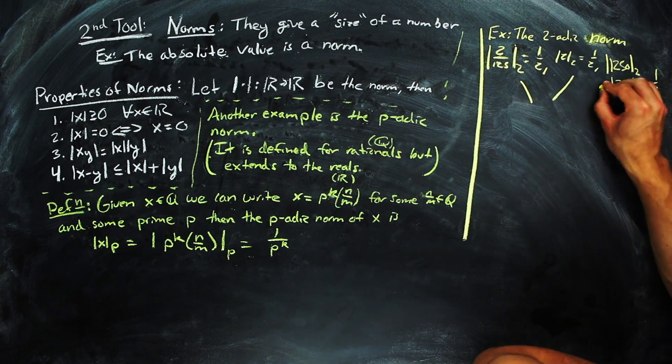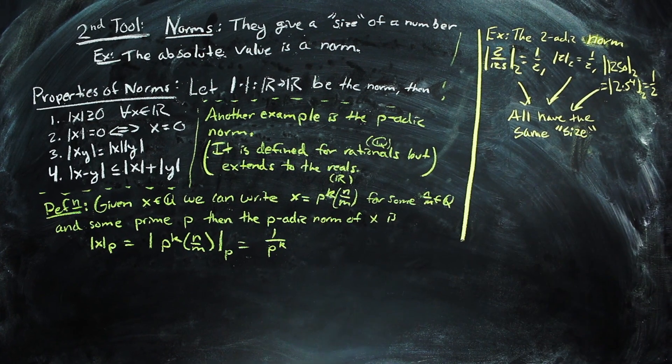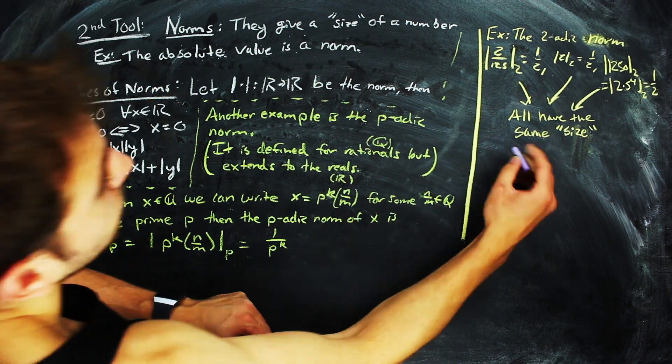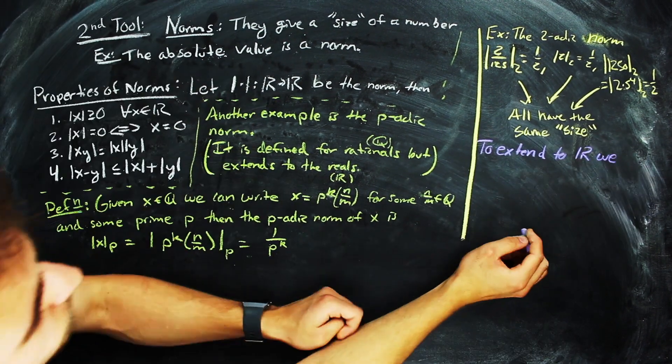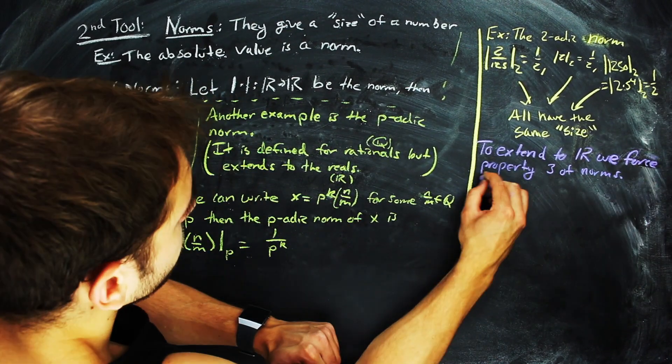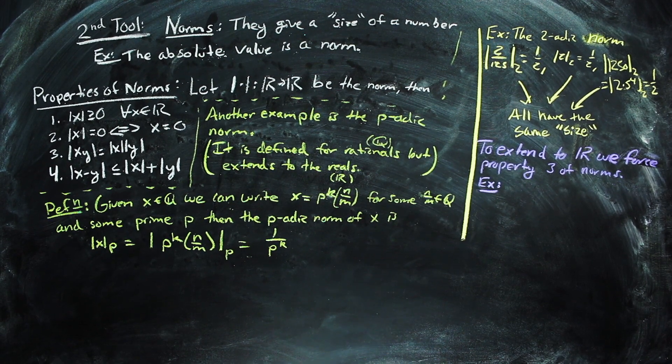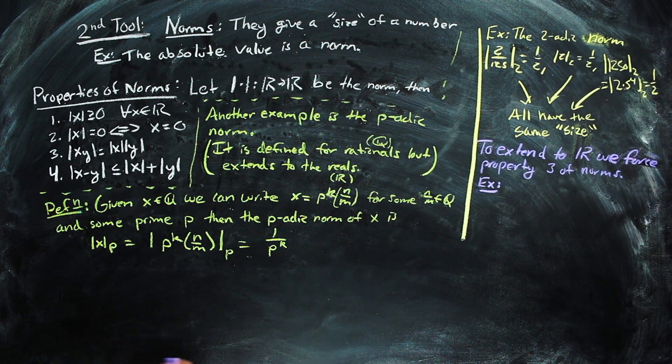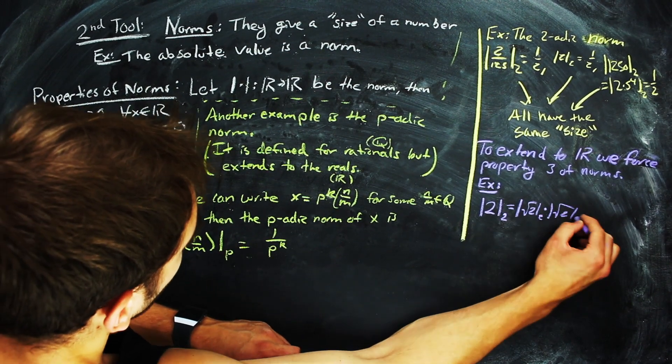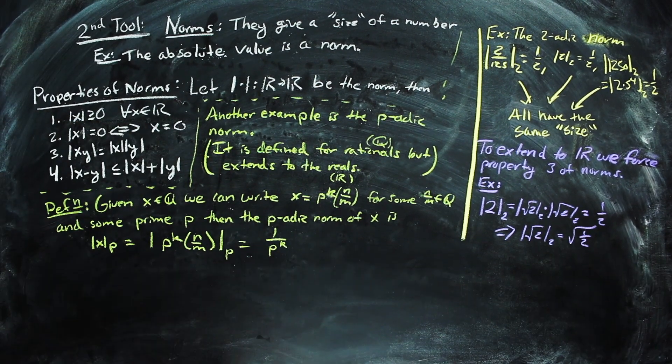So, things that would be different sizes in terms of absolute value are actually the same size in terms of the two-adic norm. Now, we need to extend the norm to the real numbers. For a lot of irrationals, this is easy. We just force the third property of norms. So, the two-adic norm of 2 is the two-adic norm of the square root of 2 times the two-adic norm of the square root of 2, which is 1/2, and so we get that the two-adic norm of the square root of 2 is just the square root of 1/2.